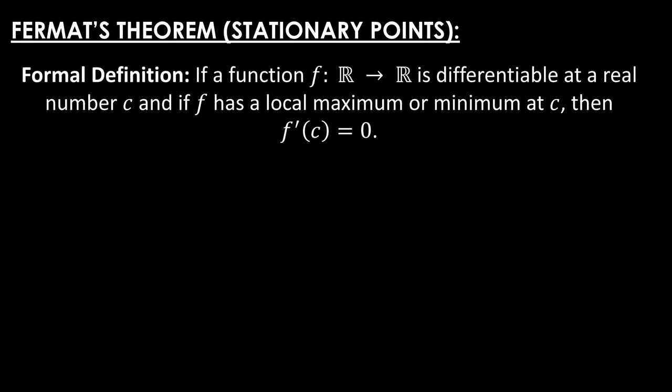The formal definition of Fermat's theorem says that if a function f is defined from reals to reals and is differentiable at a real number c, and if f has a local maximum or minimum at this point c, then the derivative of f at the point c is equal to zero.